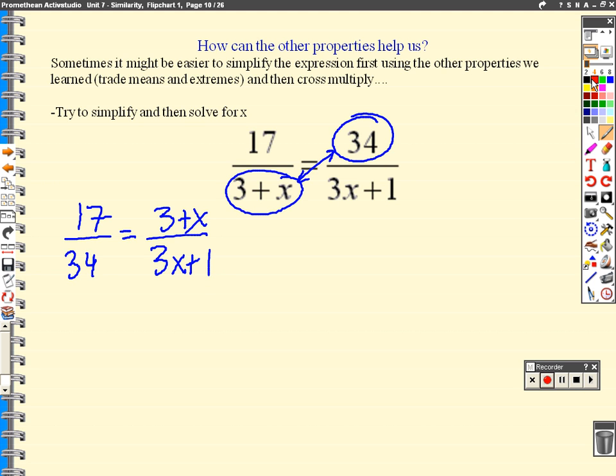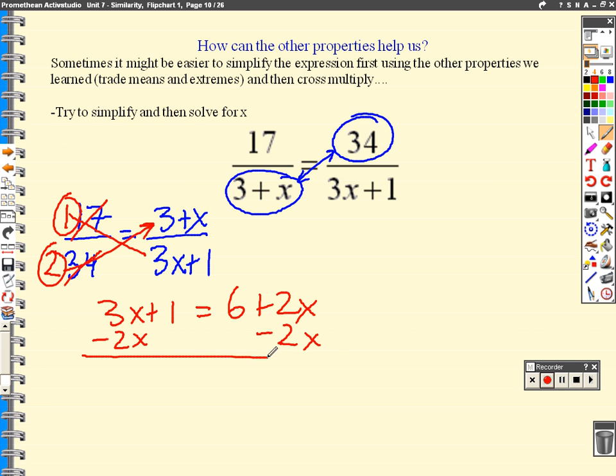If I do that, I get 17 over 34 equals 3 plus x over 3x plus 1. Now sometimes when you trade the means or trade the extremes, you can actually simplify them first. And 17 goes into 34 two times. So this would be 1, and this would be 2. Now let's try and cross multiply and see if those numbers are nicer. 1 times 3x plus 1 is just 3x plus 1. 2 times 3 plus x is 2 times 3, which is 6, plus 2 times x, which is 2x. I'm going to subtract 2x from both sides. That gives me x over here. I'm going to subtract my 1, and I get x is 5. In my opinion, simplifying first made that problem a lot easier, and we didn't get to make, I didn't make any mistakes. So that's much better.